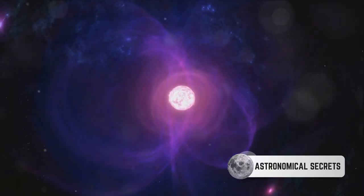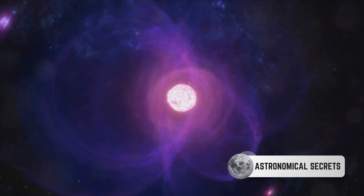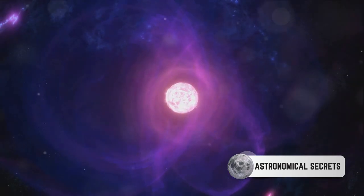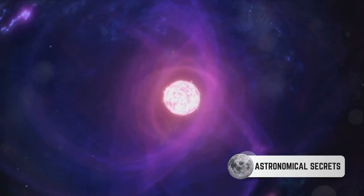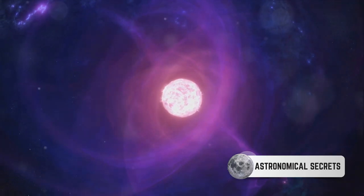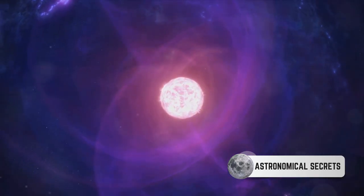Alternatively, a Type 1a supernova can also be born from the violent collision of two white dwarfs. In this scenario, the combined mass of the colliding white dwarfs exceeds the Chandrasekhar limit, triggering a similar explosion.